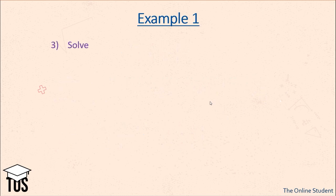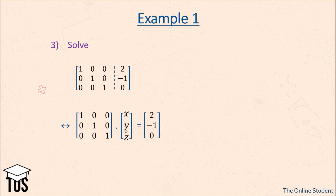Now the last thing to do is solve the equations. Each element in the augmented matrix is a coefficient of x, y, or z. The first row gives 1·x + 0·y + 0·z = -1, so x = -1. The last row gives z = 0. And we finally have our solution.